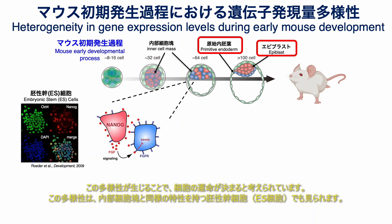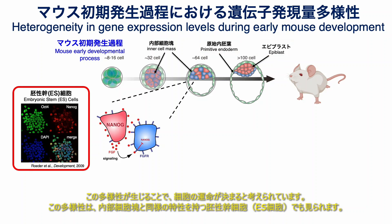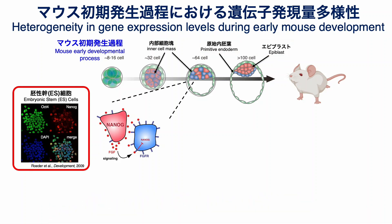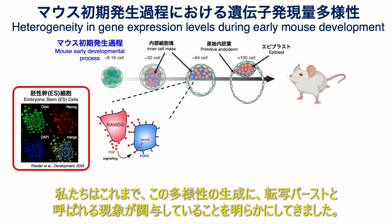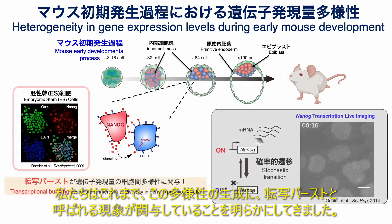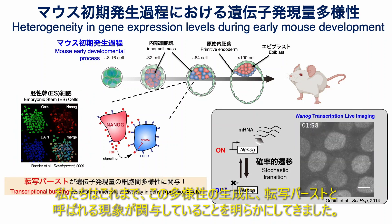This diversity is thought to determine the fate of the cells. This diversity can also be observed in embryonic stem cells, which share similar characteristics with the inner cell mass. We have revealed that a phenomenon known as transcriptional bursting is involved in generating this diversity.